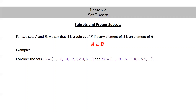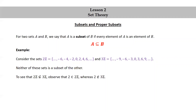As another example, consider the sets 2Z, again the set of even integers {..., -6, -4, -2, 0, 2, 4, 6, ...}, and 3Z, the integer multiples of 3, {..., -9, -6, -3, 0, 3, 6, 9, ...}. Neither of these sets is a subset of the other. To see that 2Z is not a subset of 3Z, observe that 2 is in 2Z, whereas 2 is not in 3Z. To see that 3Z is not a subset of 2Z, observe that 3 is in 3Z, whereas 3 is not in 2Z.